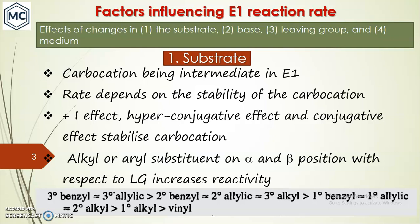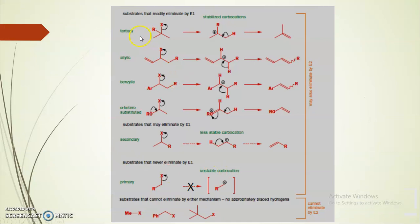In E1 elimination, when you have an alkyl or aryl substituent on the beta position, the rate of reaction increases. In the case of tertiary alkyl halide, the tertiary carbocation is stabilized by electronic effect; allylic carbocation is stabilized by resonance effect; and benzylic is also stabilized by resonance effect. This decreases the energy of the reaction intermediate and raises the rate of reaction.